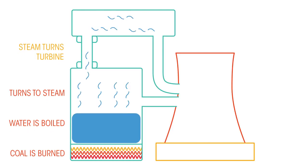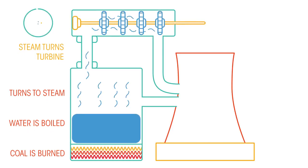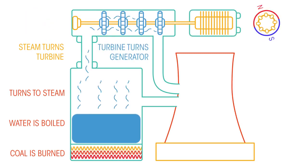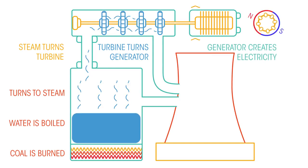This steam is used to turn the blades of a turbine. A turbine looks like a fan or a wind turbine. The turbine turns a generator. Inside, wires turn within magnets to generate electricity.